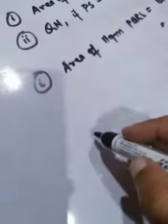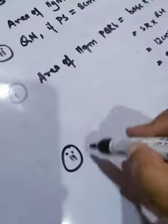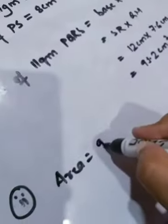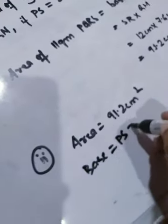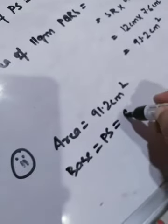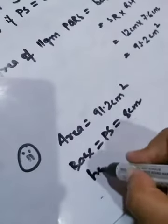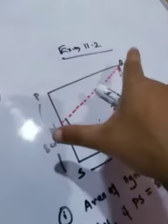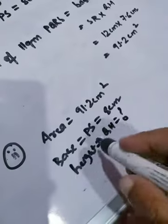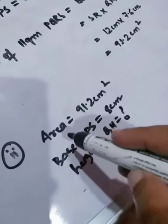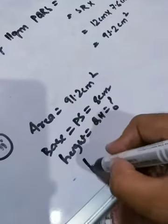We already know the area of the parallelogram. In the second case, the area is 91.2 centimeters square. The base is PS, which is 8 centimeters. What we have to find is the height, which is QN. Since the area and base are known, we need to find the height using the formula: height equals area divided by base.